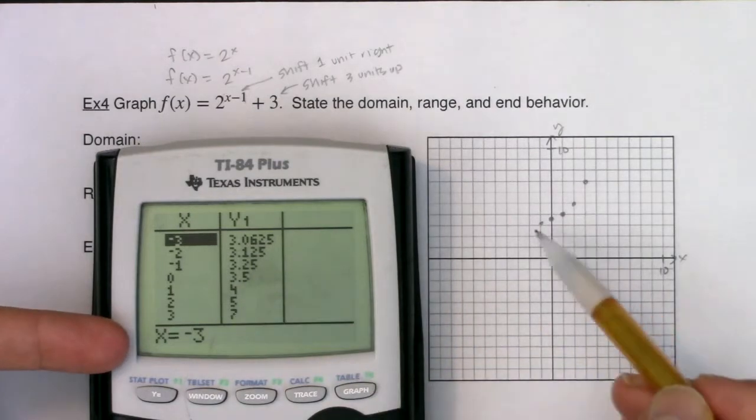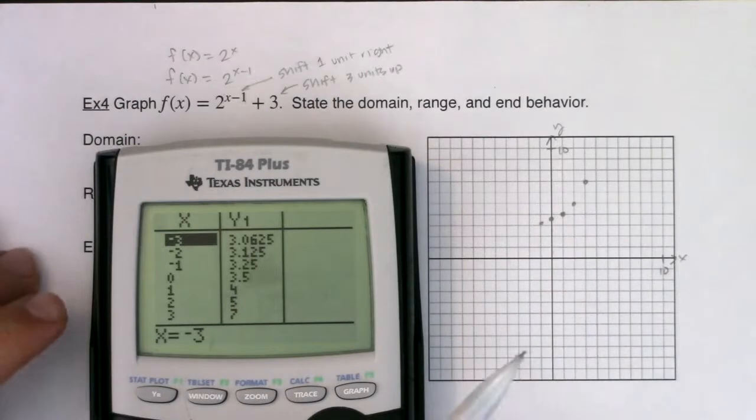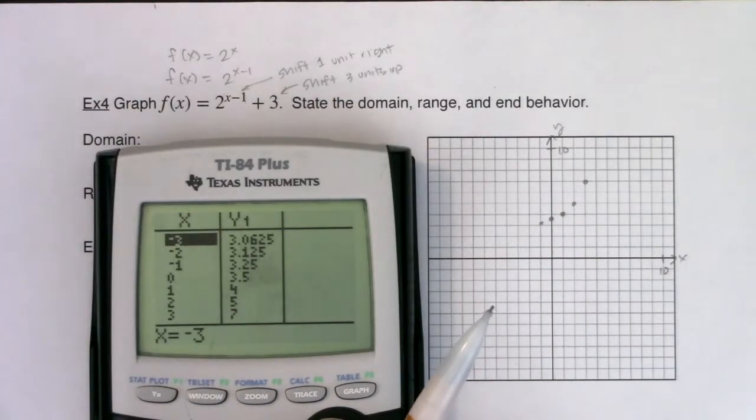And go to your table and everything's been shifted up 3 units. You heard me just saying 3 and a half, 4, 5 and 7. Well, here they are.